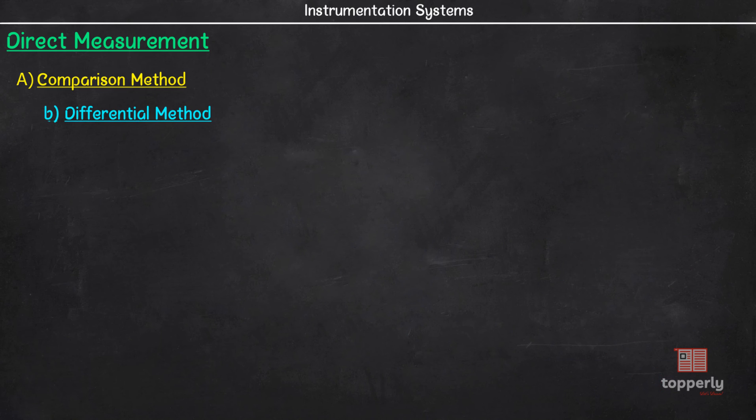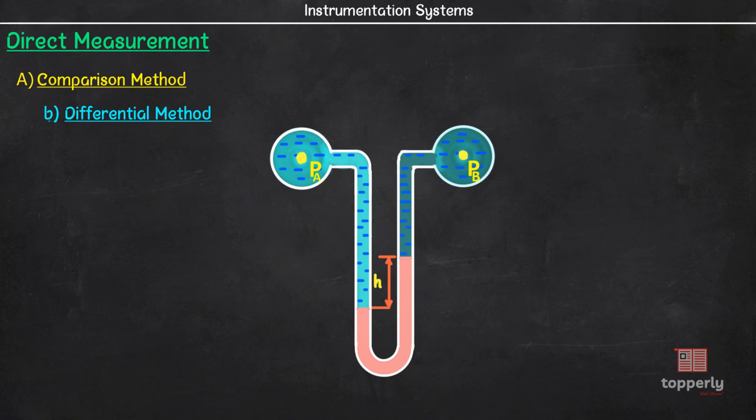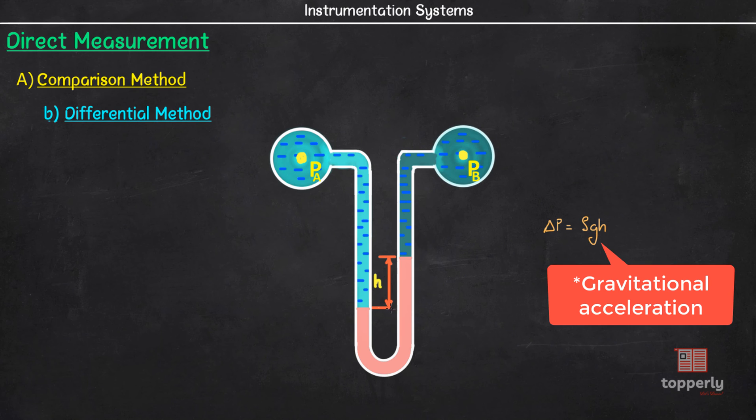Now the next subclass is differential method of measurement. An example is a differential U-tube manometer which is used to measure the pressure of fluids. Here, the difference between a known physical quantity and the unknown physical quantity that is being measured is established. For instance, in the case of our manometer, if we know the pressure at one end, we can calculate the difference in pressures at both ends using the formula ΔP = ρgh, where ρ is the density of the manometric fluid, g is the gravitational constant and h is indicated in the figure.